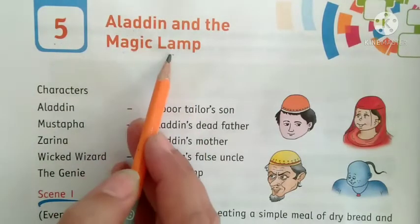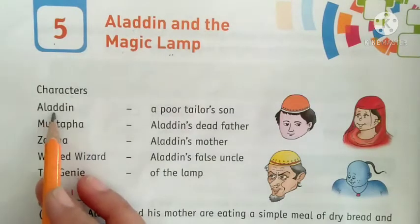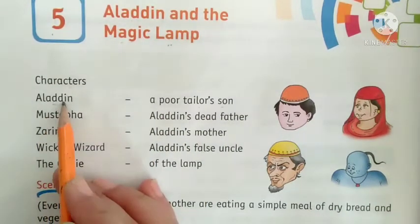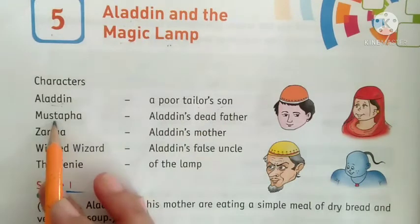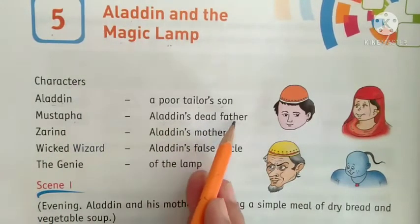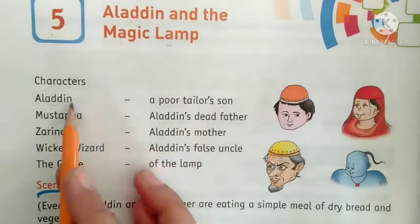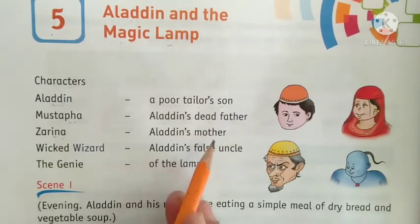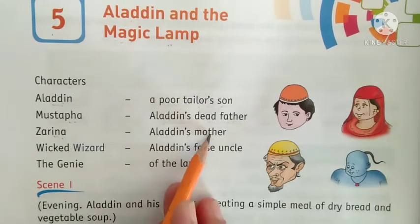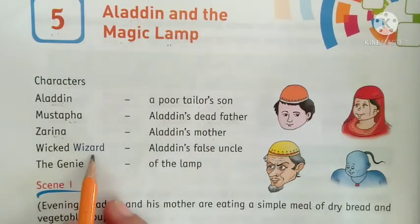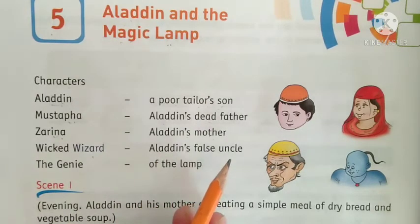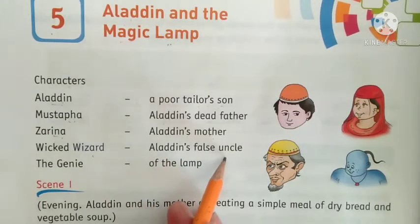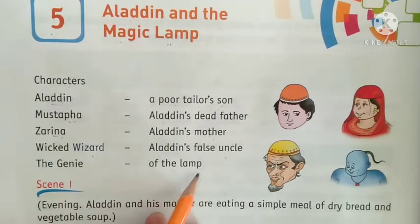Aladdin and his magic lamp. Characters: Aladdin — a poor tailor's son. Mustafa — Aladdin's dead father. Zarina — Aladdin's mother. Wicked Wizard — Aladdin's false uncle. Means he was not Aladdin's uncle, but he came as Aladdin's uncle. Okay. The Genie of the Lamp.